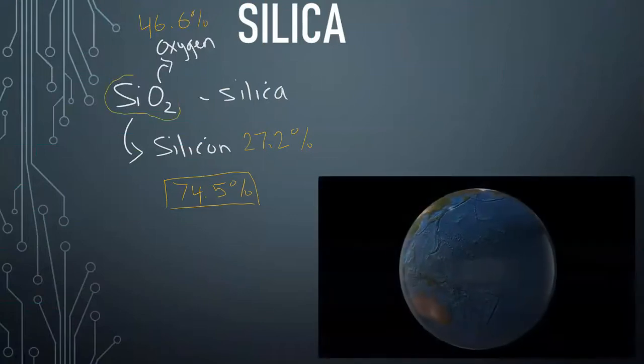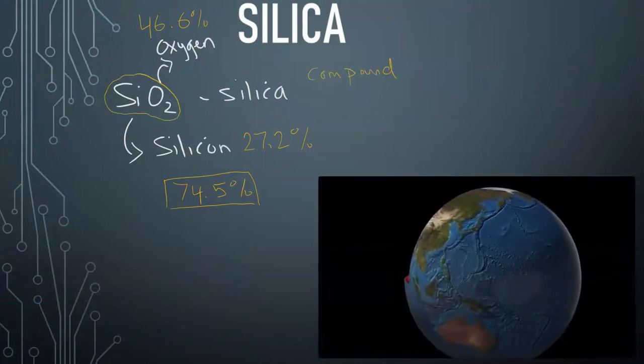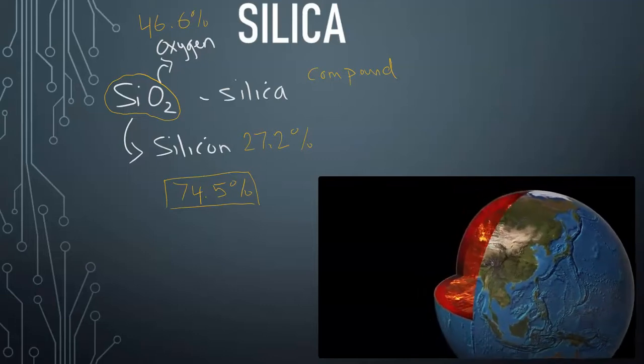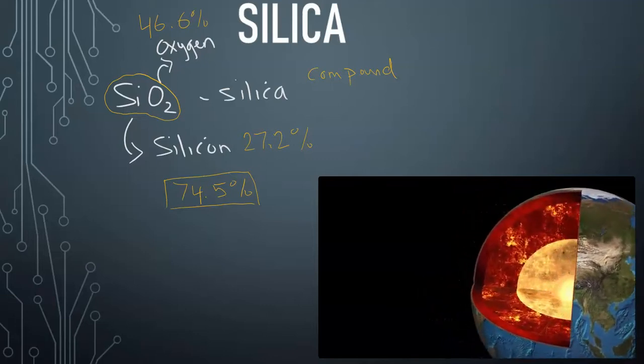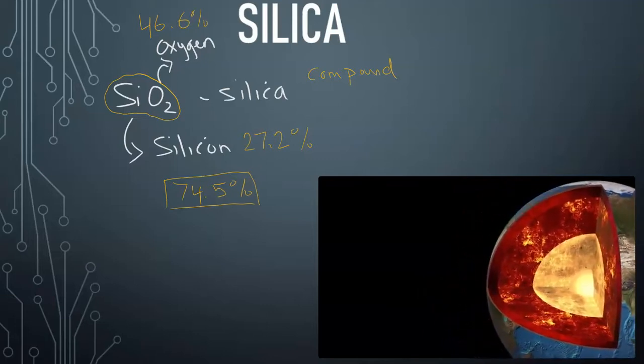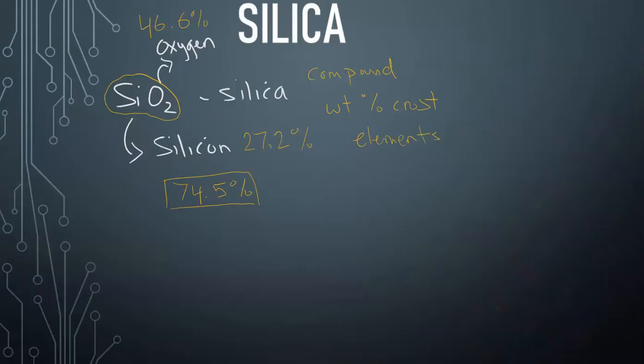All right, so silica is SiO2. It is a compound and the two parts are silicon and oxygen. Silicon is 27.2% and oxygen is 46.6%. This is the percentage by weight in the crust of these elements. Now when they combine to make silica, you're looking at nearly 75%, three quarters of the crust is composed of both silicon and oxygen.